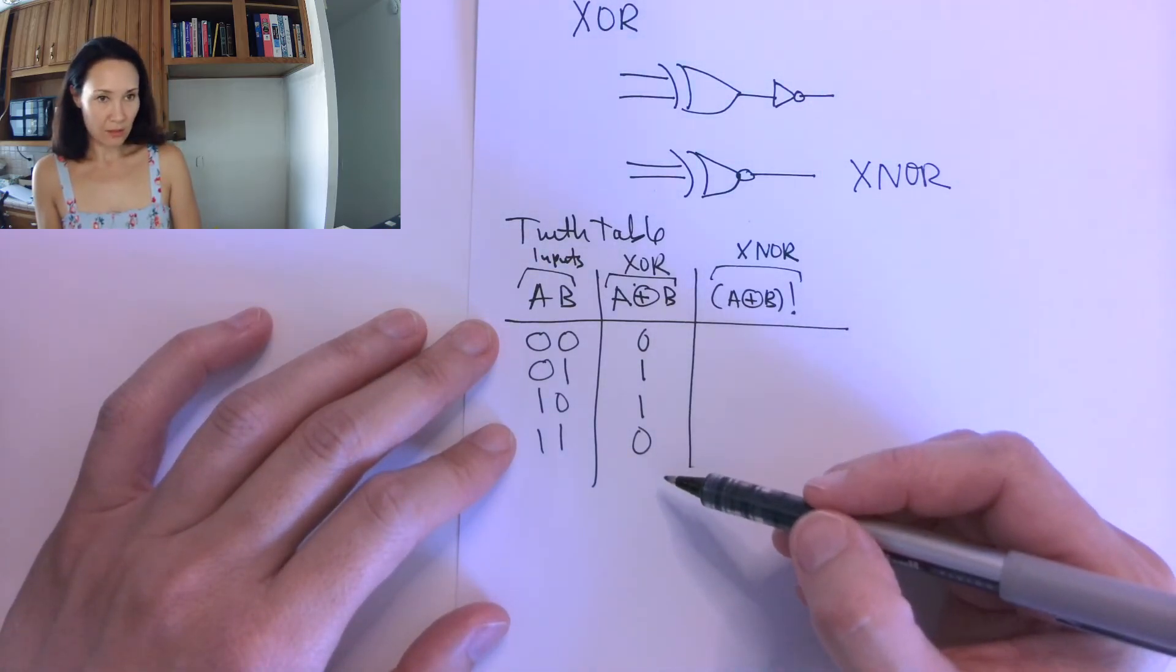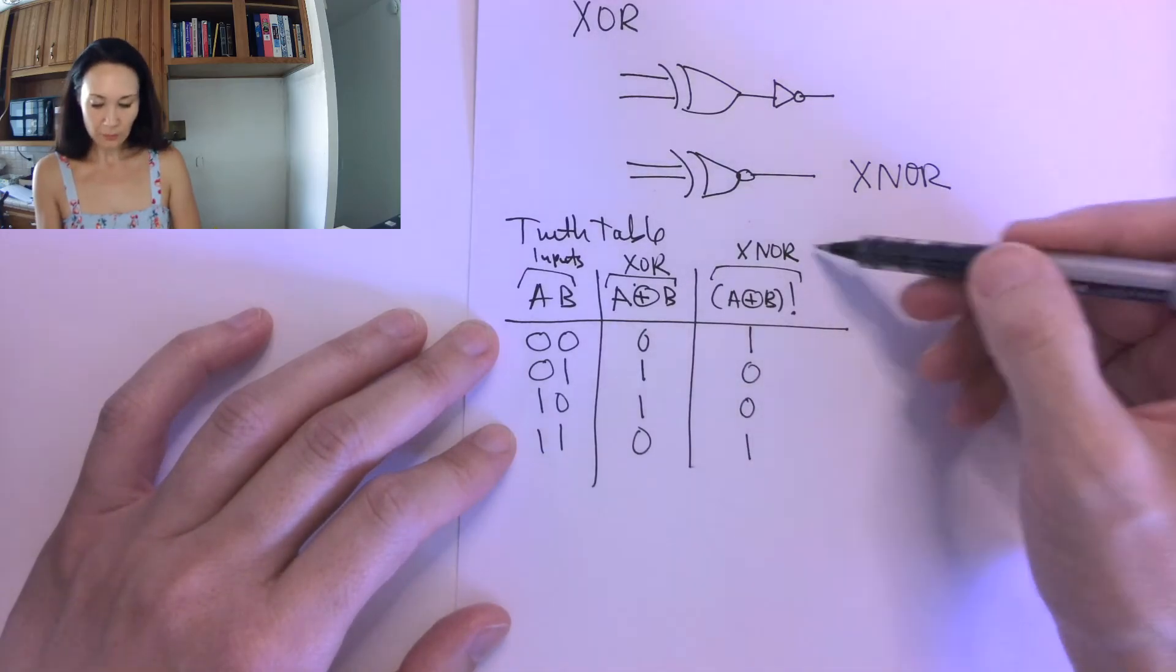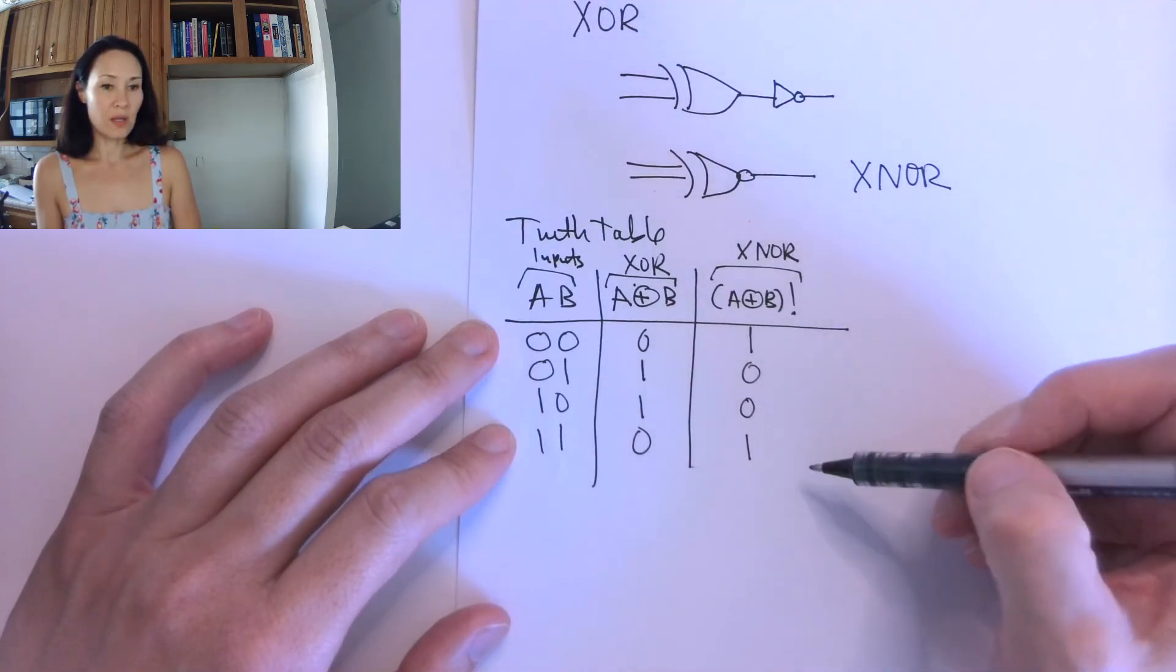Now, we take this XOR column and we just invert the bits. So this gives us 1, 0, 0, 1. And this is the output of the XNOR gate.